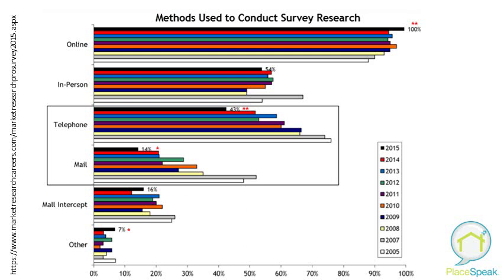Typically there are four methods for administering a survey. In decreasing order of cost and reliability, they are: in-person interviews, phone interviews, mail-outs, and then online. This is an interesting statistic graphic from a market research provider — they surveyed all providers of market research, and this is the first year where online has been unanimously selected as a method to conduct survey research. Telephone and mail have decreased considerably over previous years, so we're seeing a shift in the way market research is being conducted, and conventional methods are being downplayed.